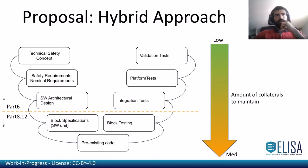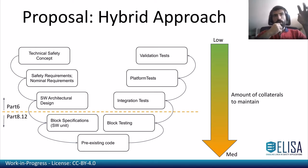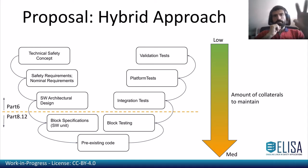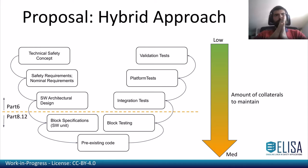This diagram is similar to the Part 6 one, but with a key difference: Part 6 is followed from the technical safety concept down to software architectural design, and from integration testing up to validation test. For the single block, we use Part 8.12 — instead of a software function as the software unit, we have drivers and subsystems at a higher, bigger granularity.